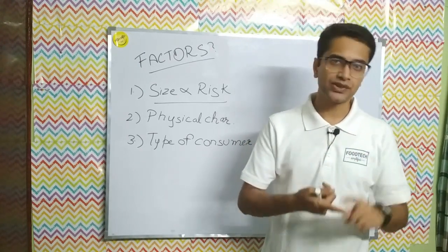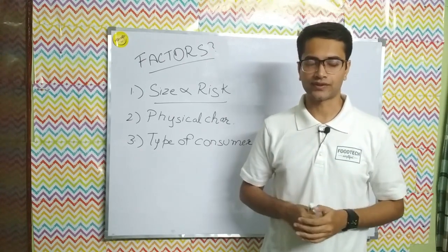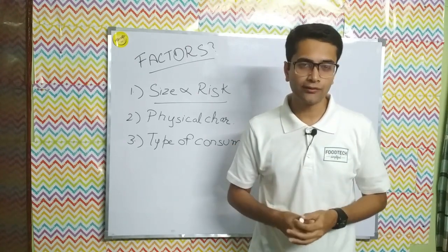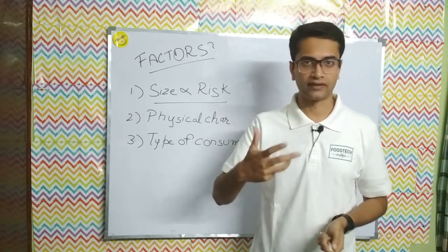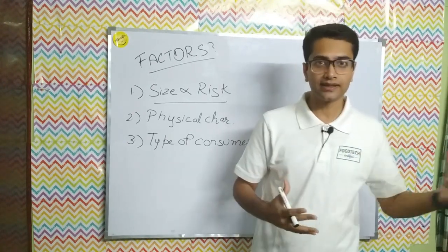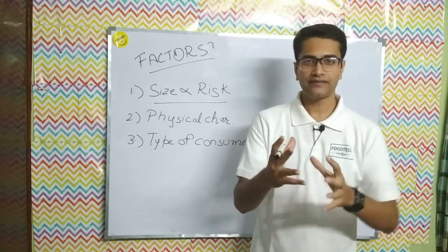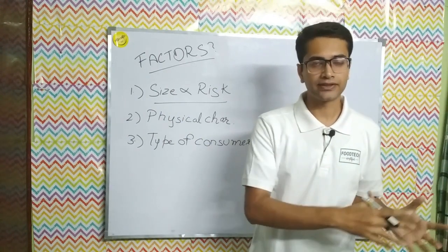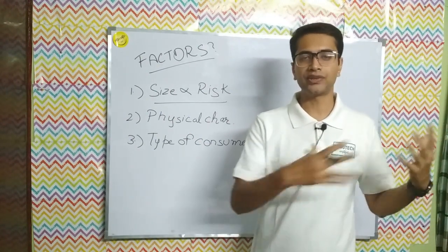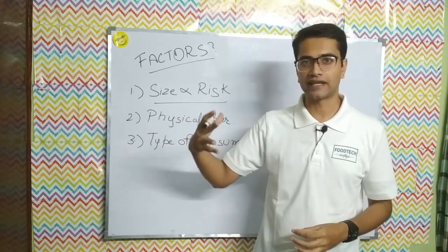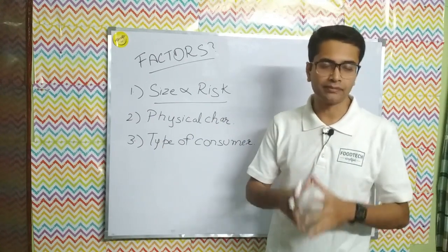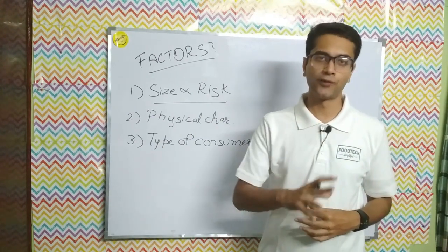Factor three is the type of consumer. Consumers in the 18–25 age group have a stronger defense system compared to infants and elderly people. If a food containing a metal fragment is consumed by infants or people over 65 years of age, the risk of injury is significantly greater. Therefore, the size of the risk is also determined by the type of consumer eating the food.